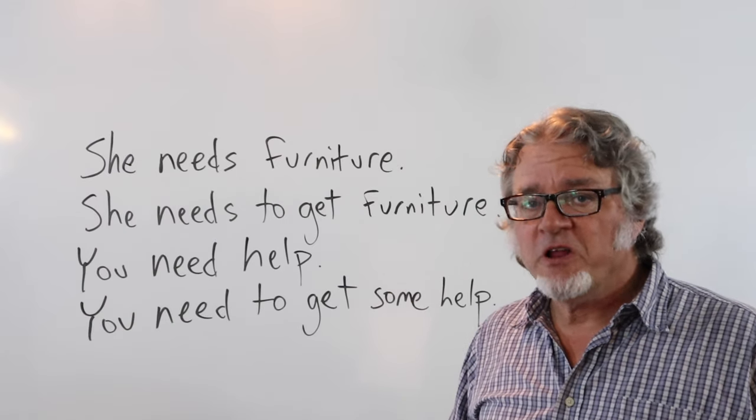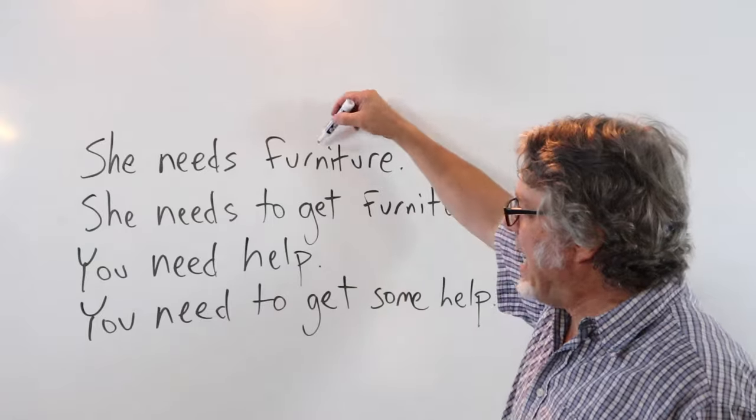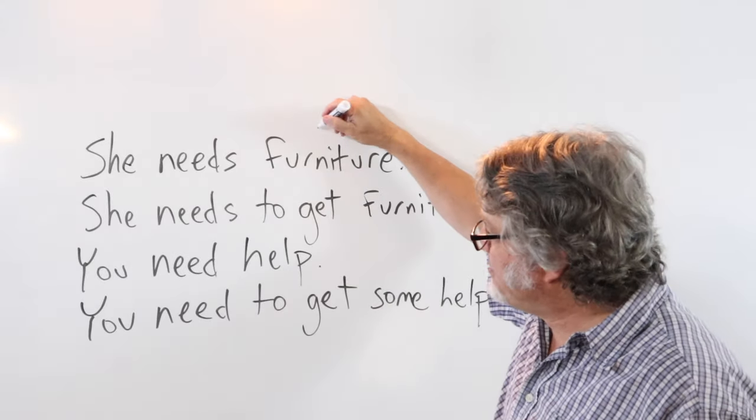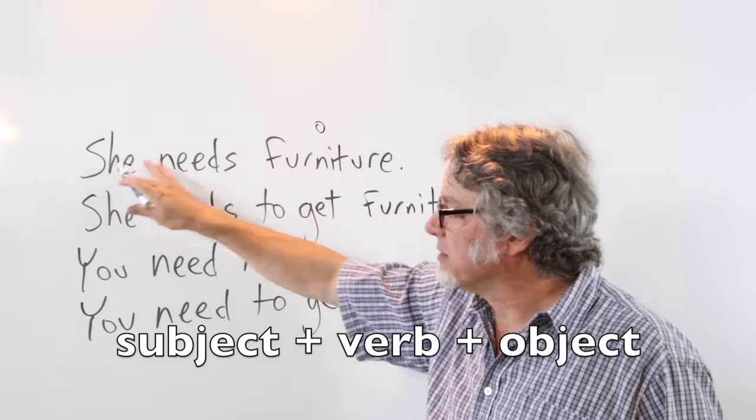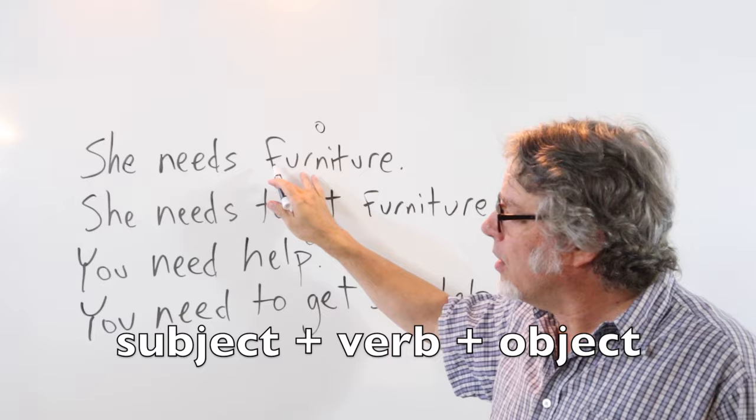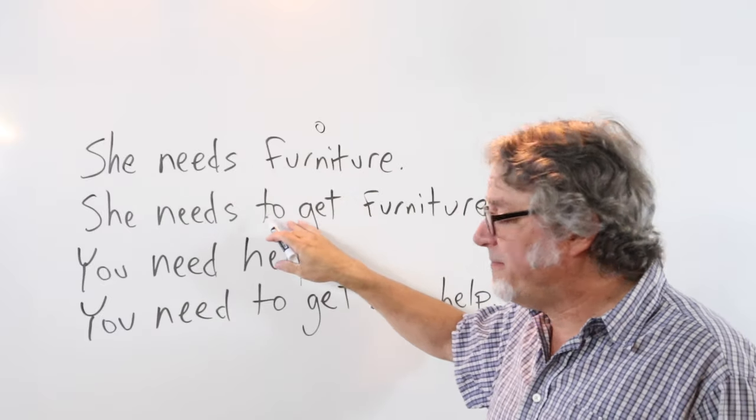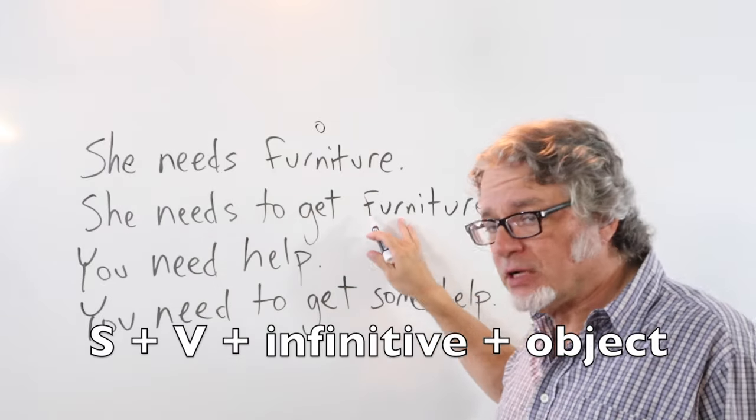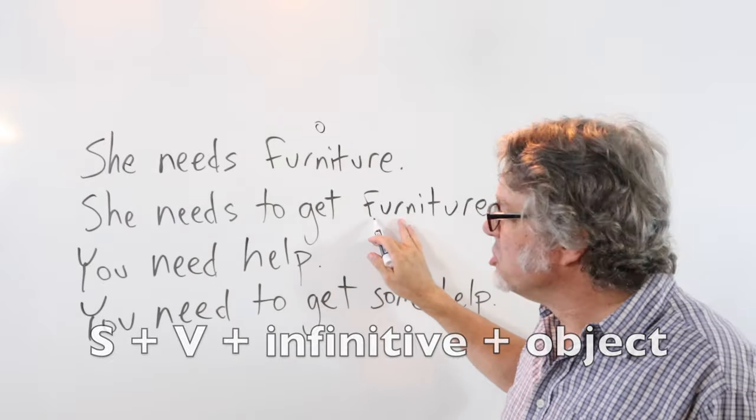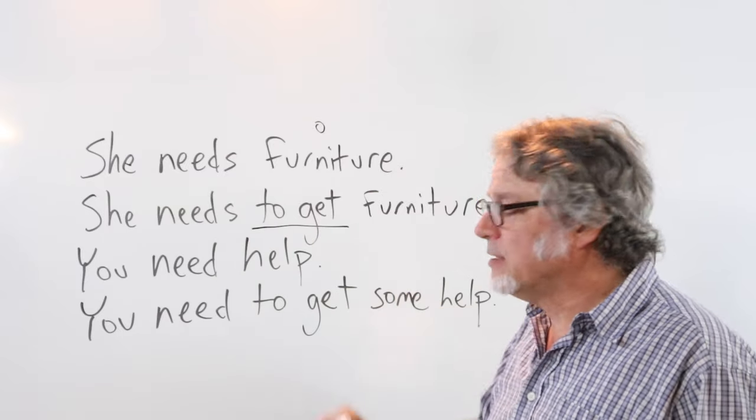She needs furniture. Here is a noun. This is an object in the sentence. Subject, verb, object. Or you can use an infinitive and then the object of the infinitive. She needs to get furniture.